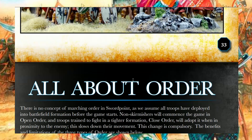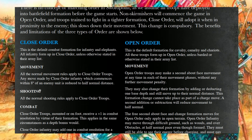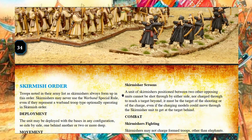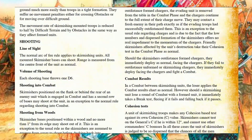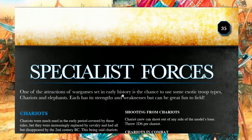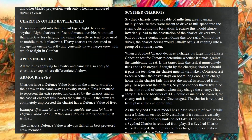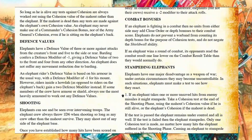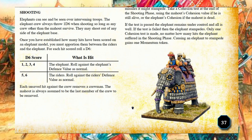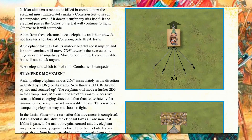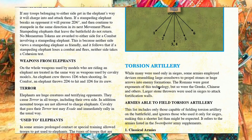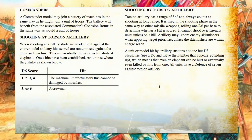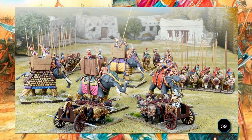Then it explains the order types: close order troops, how they move and shoot and fight; open order — a nice summary of open order versus close order troops; and skirmish order, with really amazing photographs. Then special forces: chariots with their armor saves, and a big section on elephants — combating different units, skirmishers versus elephants, how you hit them, stampede elephants, and stampede movement. I've read the rules but never played with elephants, though it's quite substantial and explains a lot.